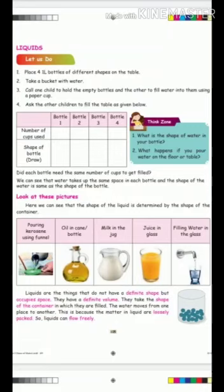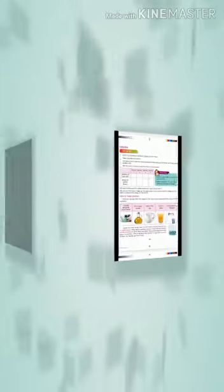Liquids are the things that do not have a definite shape but occupy space. They have a definite volume. They take the shape of the container in which they are filled. The water moves from one place to another. This is because the matter in liquid is loosely packed, so liquids can flow freely.